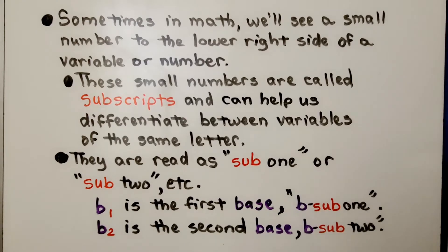Sometimes in math, we'll see a small number to the lower right side of a variable or number. These small numbers are called subscripts and can help us differentiate between variables of the same letter. They're read as sub 1 or sub 2.